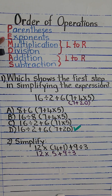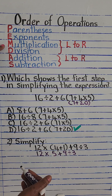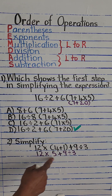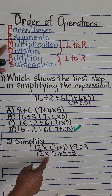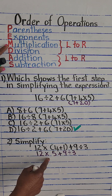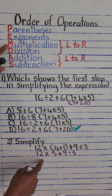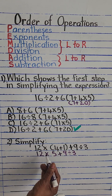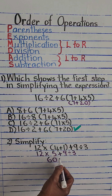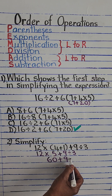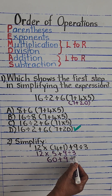Step 2: there are no more parentheses. In fifth grade we're not really concerned about exponents, so the next step is multiplication and division. We have both, so working from left to right, multiplication comes first. We perform 12 times 5 equals 60, giving us 60 plus 9 divided by 3.